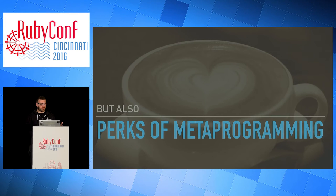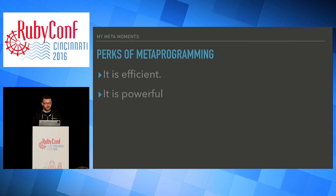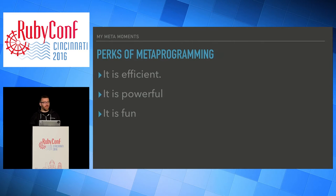That being said, there are also some perks. It's efficient — going back to that validate method, I can call hundreds of methods with three lines of code. I don't need to worry if someone adds validations; I know they're just going to get called. It's powerful: it can allow you to change the behavior of a class, change the way classes inherit from each other. You can manipulate the codebase in very useful ways. And I think the most important thing is it's fun, which is why if you're new and someone tells you not to metaprogram, you should metaprogram. Don't commit it to production, but play around. Ruby allows some really powerful stuff, and the curiosity you use to explore metaprogramming should be fed.